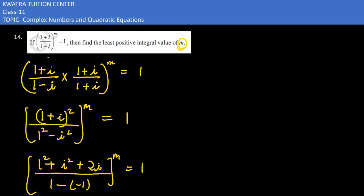1 squared and i squared - what does that mean? You have is minus 1, plus 2i. The terms become: our 1 plus 1 would be 2, to the power m equals 1.